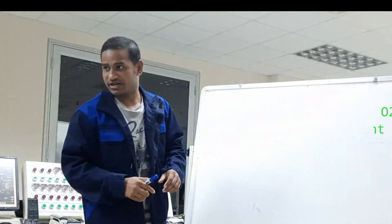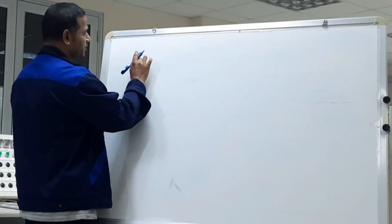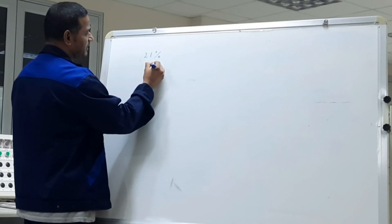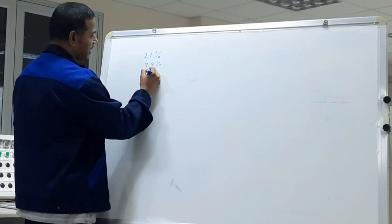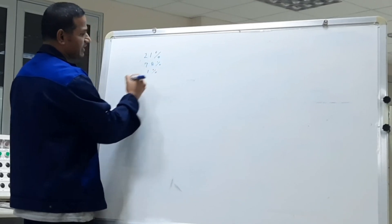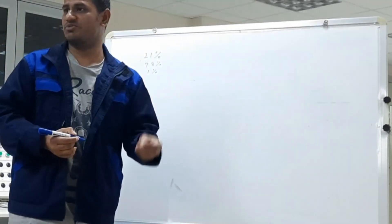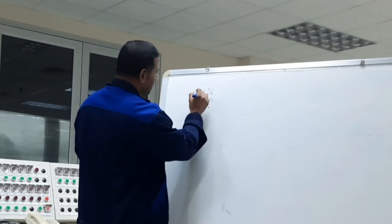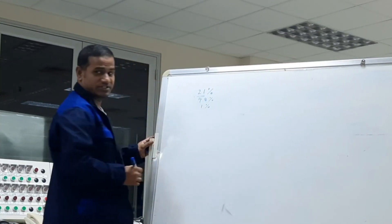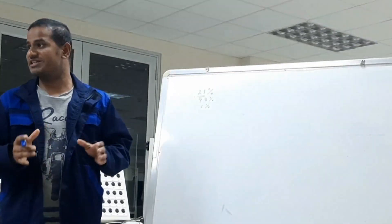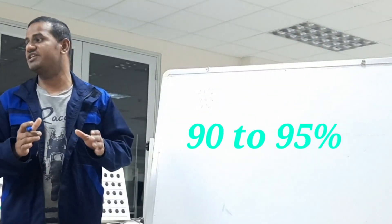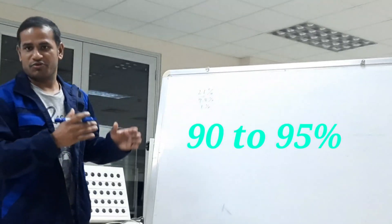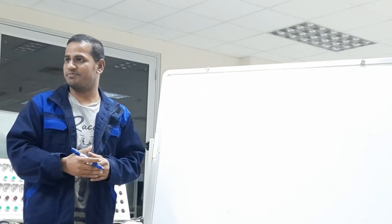In the atmospheric air, oxygen percentage is 21%, and 78% nitrogen, with around 1% other gases such as argon, carbon dioxide, and other gases. From this, we have only 21% oxygen. For COVID patients, oxygen percentage required is more than 90% — 90 to 95%.